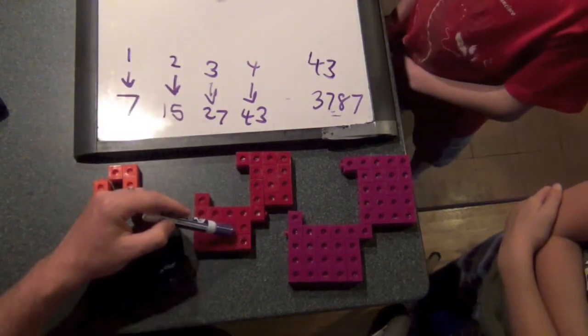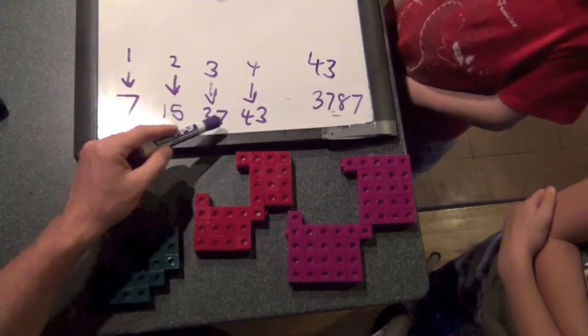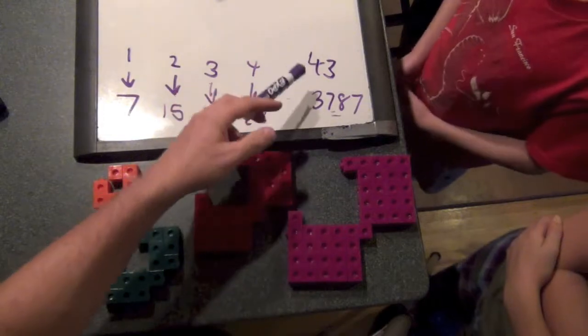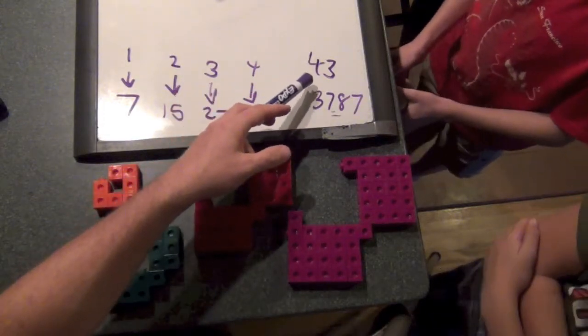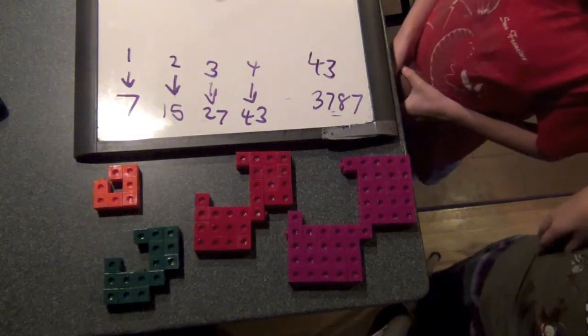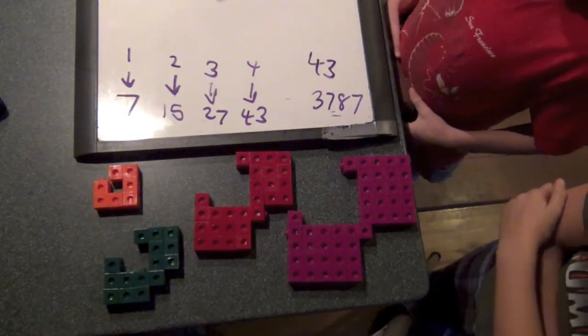The second one had fifteen. That's just the green one. The third one, the red one, had twenty-seven. And the fourth one, the purple one, had forty-three. And on the visual pattern site it tells us that the forty-third one has three thousand seven hundred and eighty-seven.